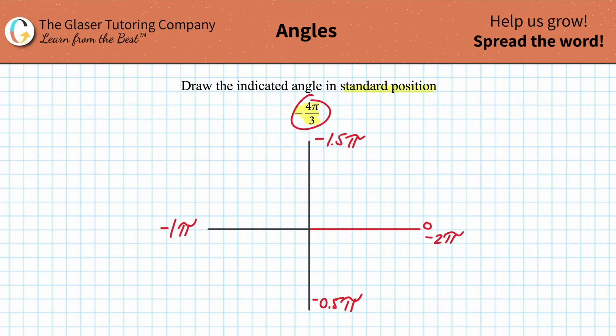So now our job is to plot this. Simply take that and convert it into a decimal. So you can first rewrite that as negative 4 over 3π, and then you can do that in the calculator. So that would be negative about 1.33-ish, so about 1.3π.